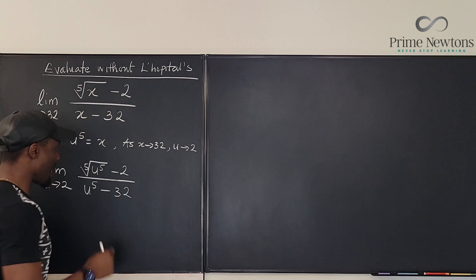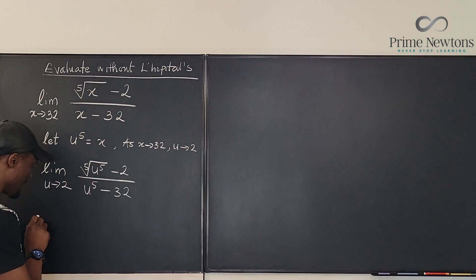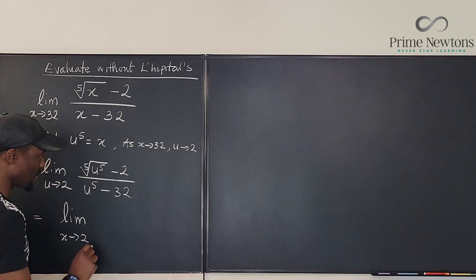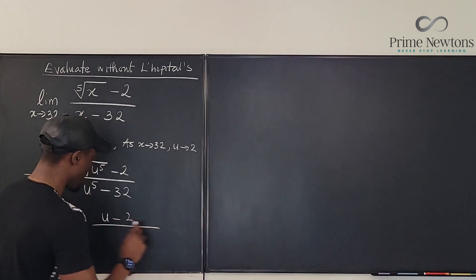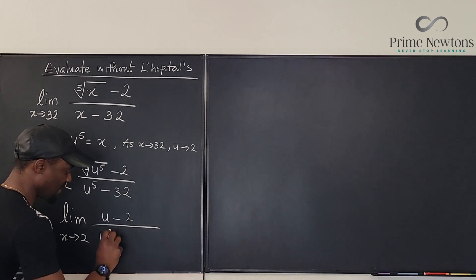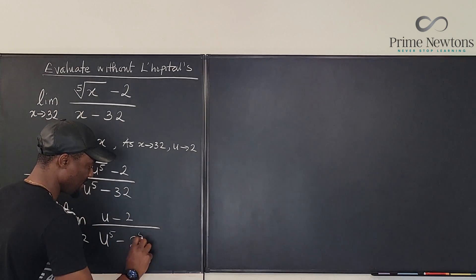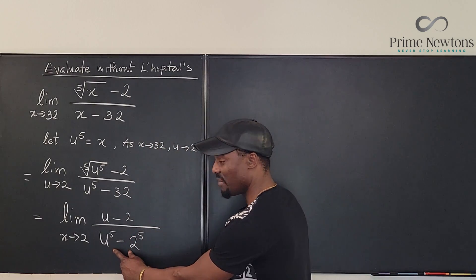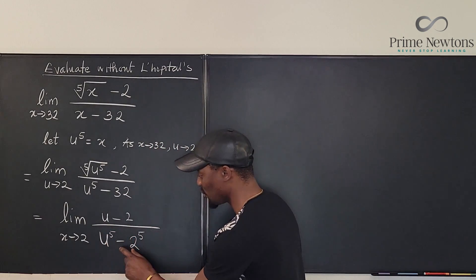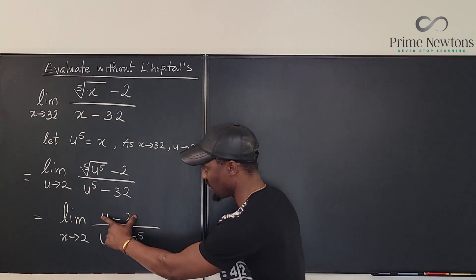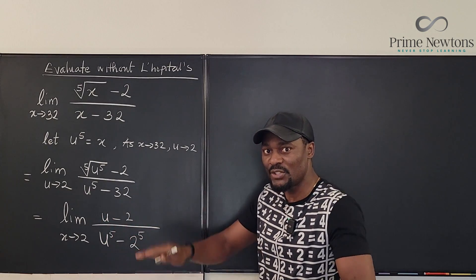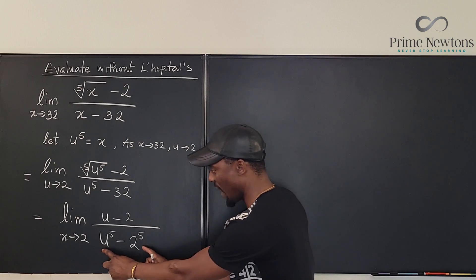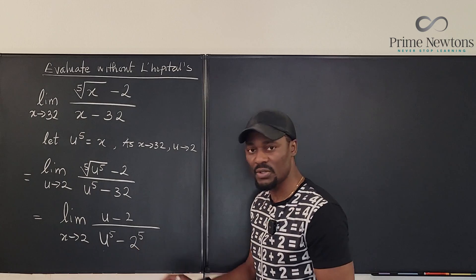You might ask: how does this help? Well, the fifth root will cancel with the fifth power, so we have the limit as u goes to 2 of u minus 2 over u to the fifth minus 2 to the fifth. Clearly when I factor the bottom, I'm going to have u minus 2 as one of the factors, which will cancel the u minus 2 on top — taking care of the 0 over 0 situation. The only problem is I need to know how to expand u to the fifth minus 2 to the fifth.